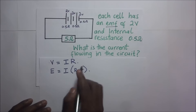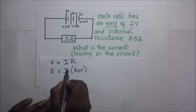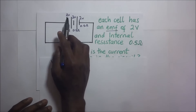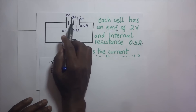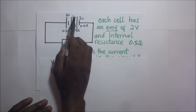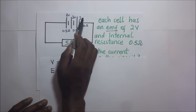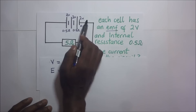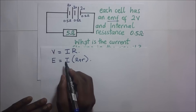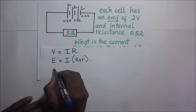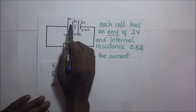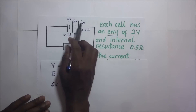Now we want to find the current, so it's a matter of making I the subject of the formula. The EMF of each cell is 2 volts, 2 volts, and 2 volts. When we add up the total EMF, since these cells are in series, we get 2 plus 2 plus 2, which gives us 6 volts.